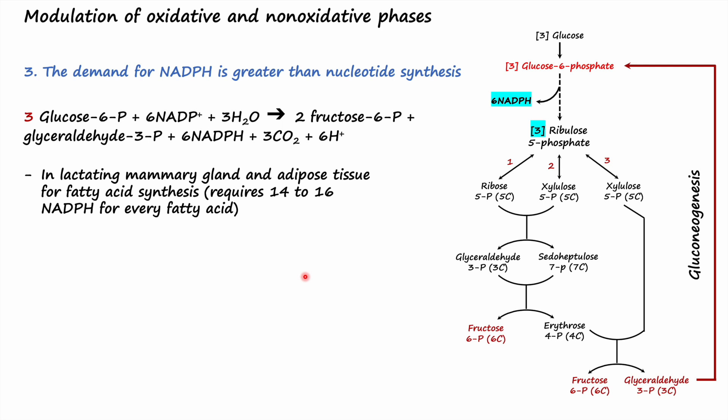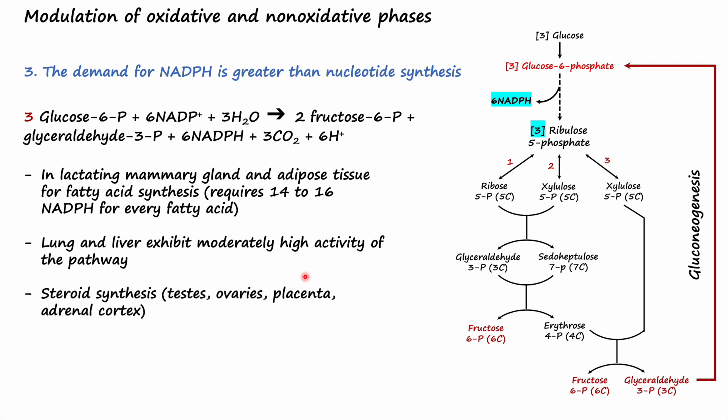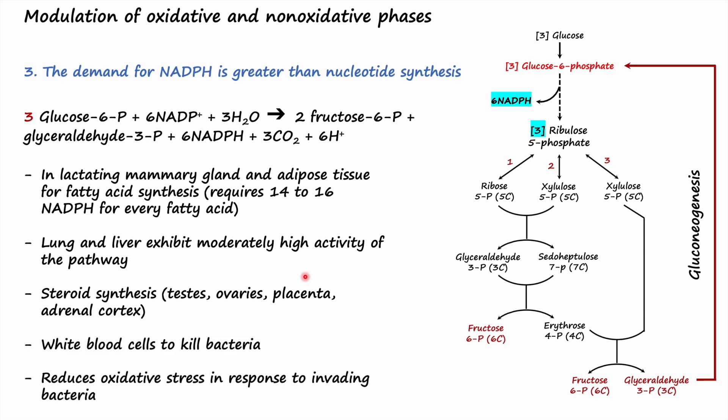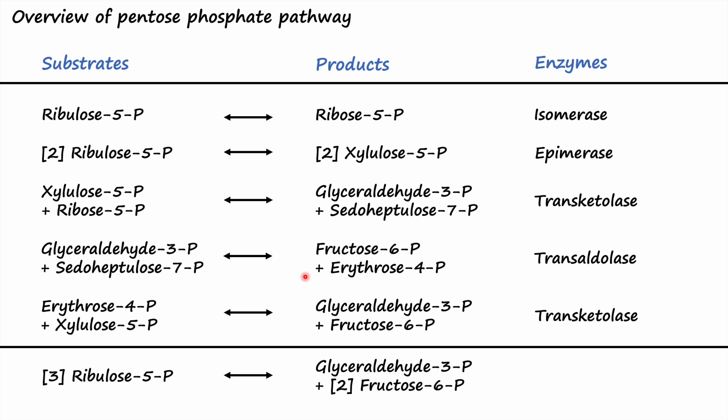NADPH is the reductive bioequivalent used in the lactating mammary gland and adipose tissue for fatty acid synthesis — around 14 to 16 NADPH molecules are used for every fatty acid such as palmitate. It is also important in the lung and liver for reductive biosynthesis, in steroid synthesis in the testes, ovaries, placenta, and adrenal cortex, and in white blood cells to kill bacteria and reduce oxidative stress. This concludes the lesson on the pentose phosphate pathway. Please like, share, and subscribe if you found it helpful.